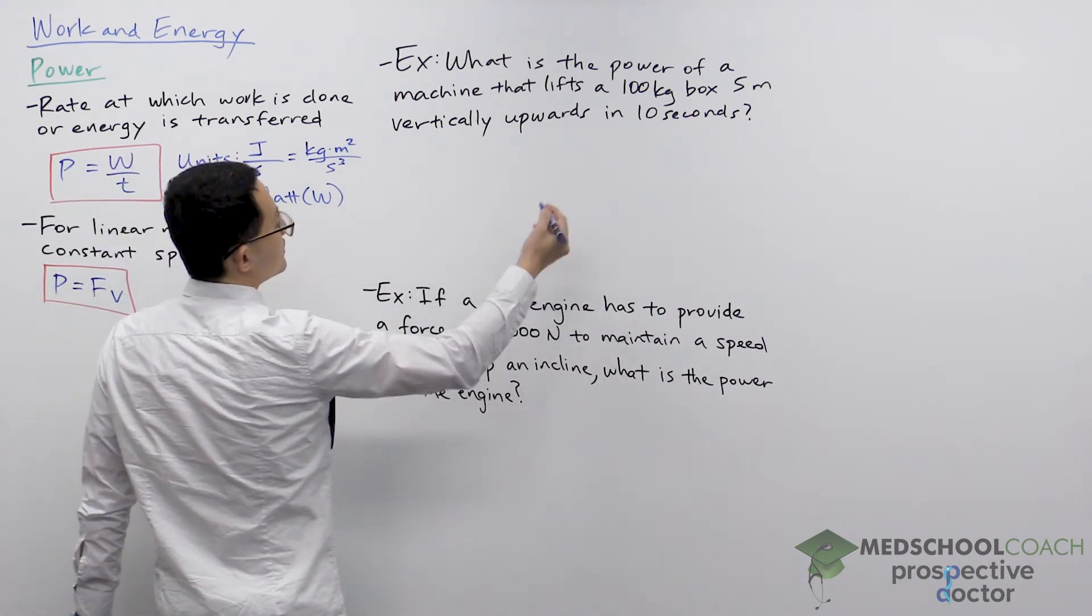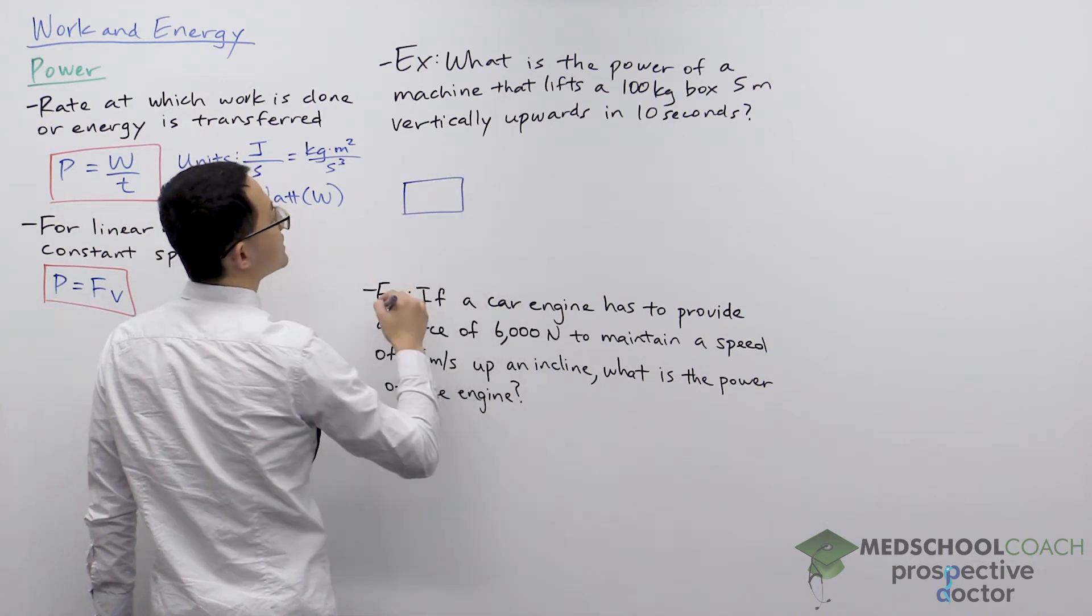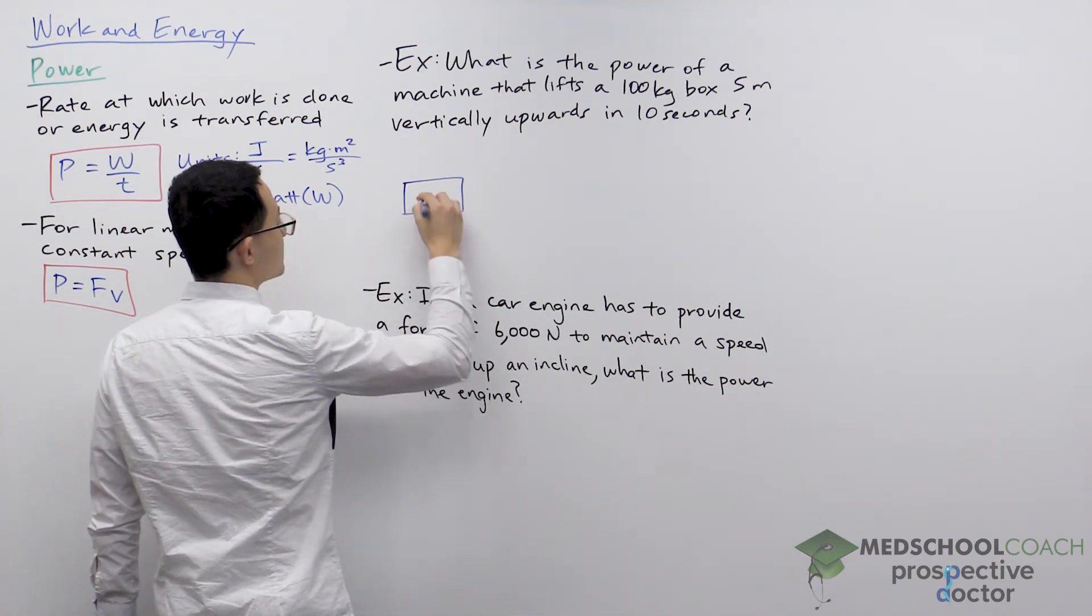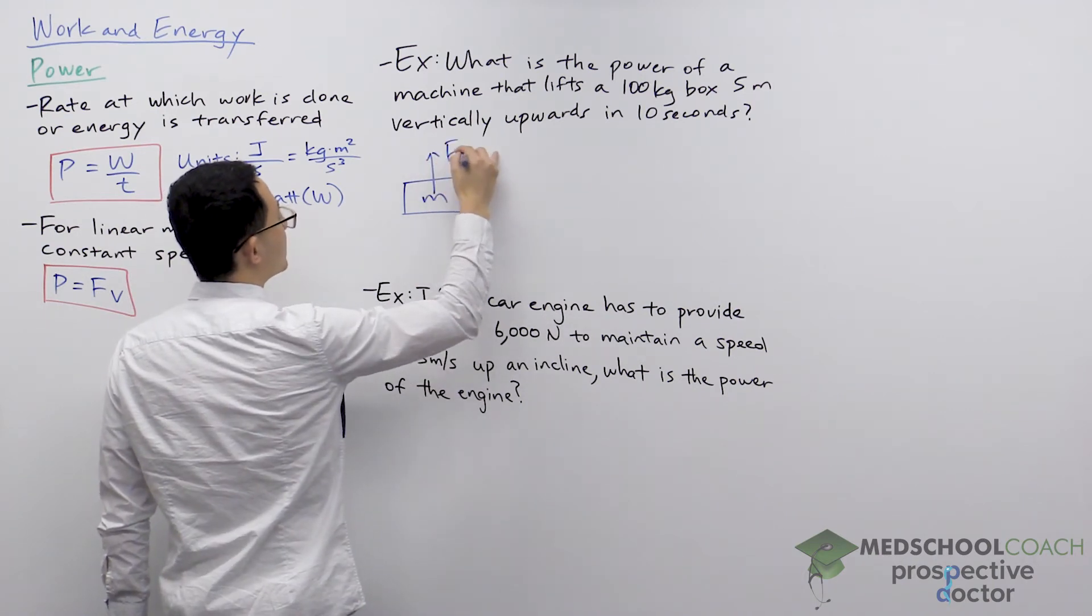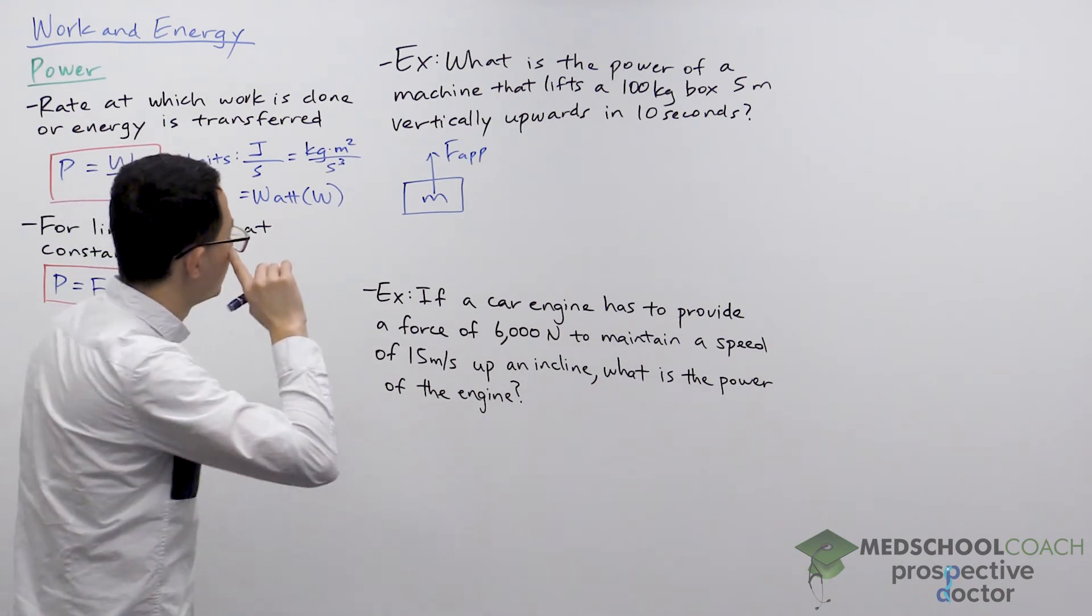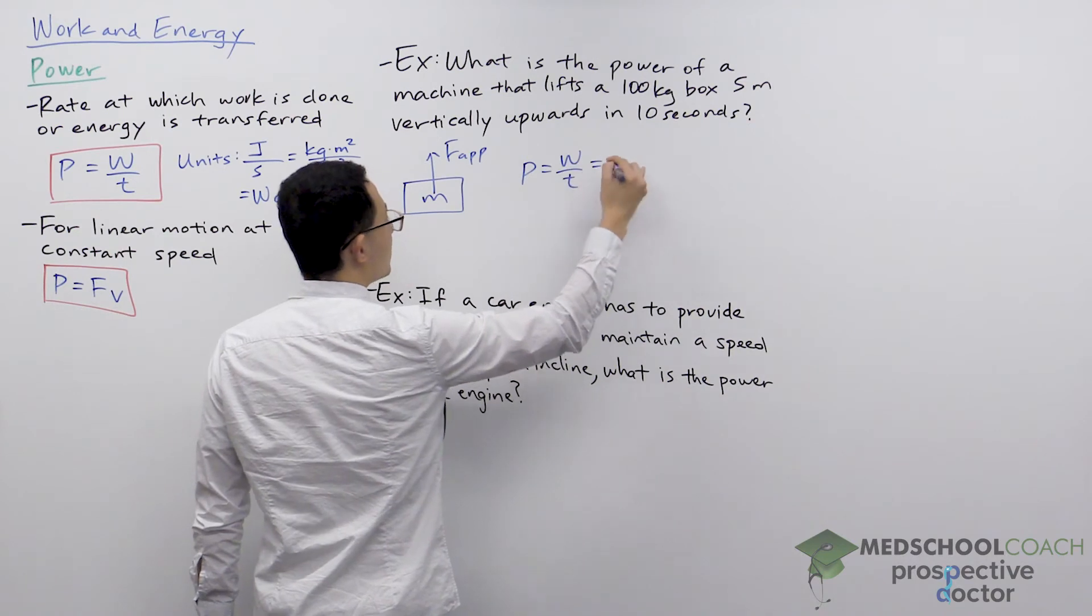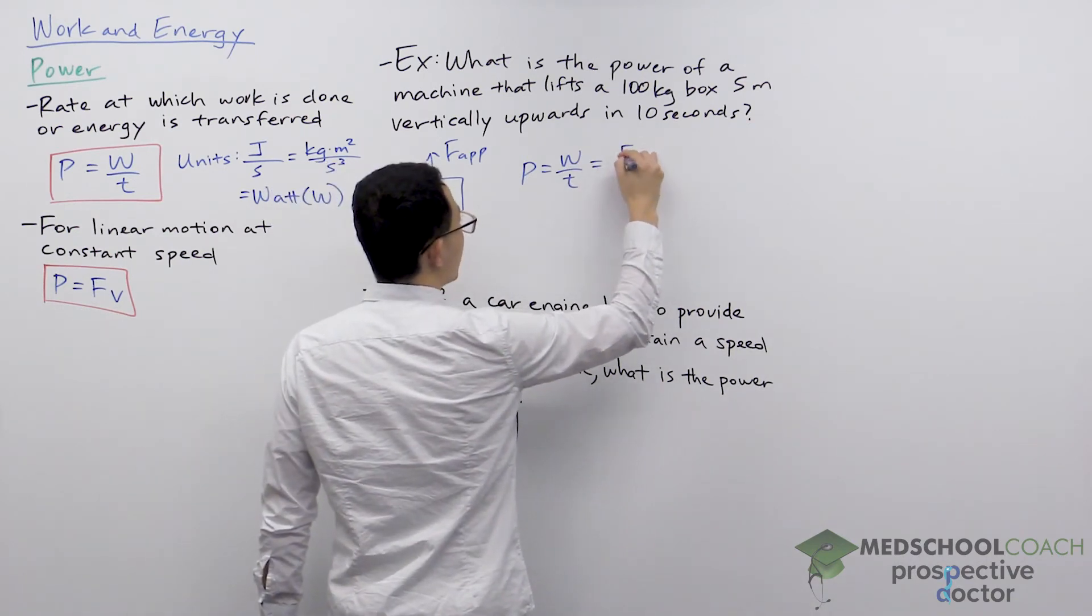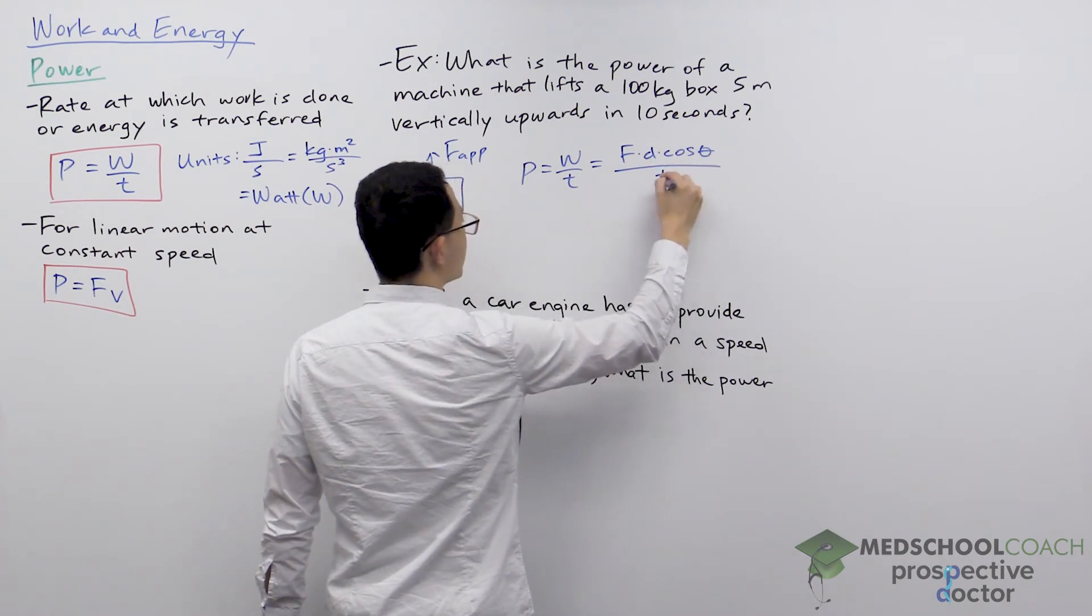All right. So to calculate this, first we can draw the situation. We have a box that is 100 kilograms, and it's being lifted up with the applied force of the machine that's doing the work. So if we want to calculate the power, power is equal to work over time. Work, we know, is equal to Fd cosine theta divided by time.